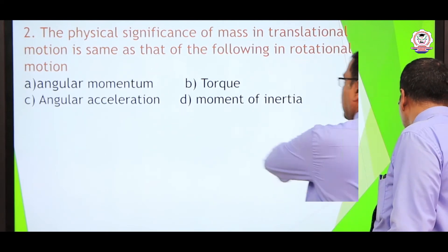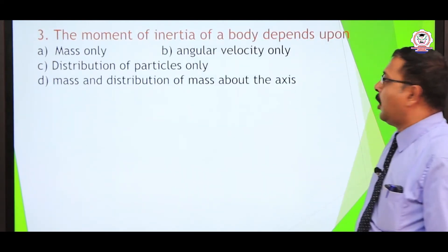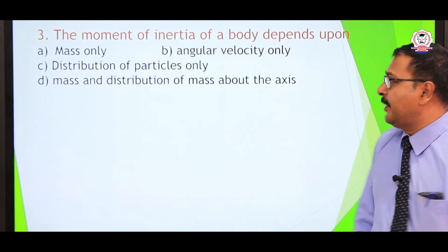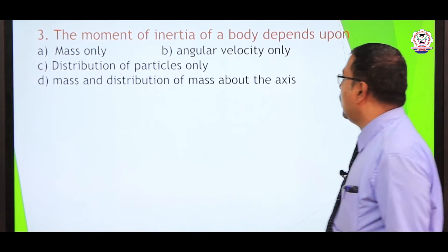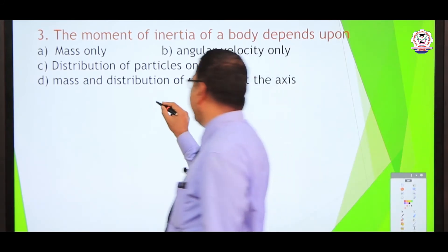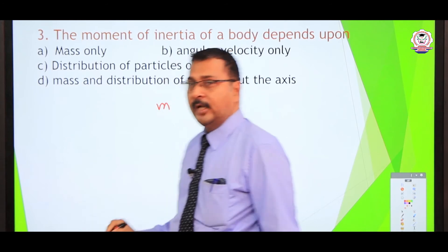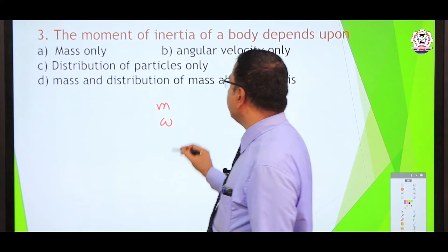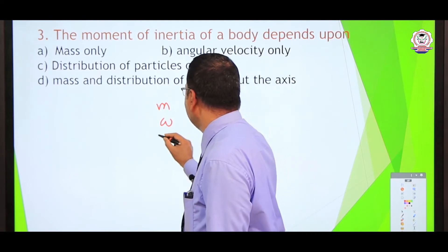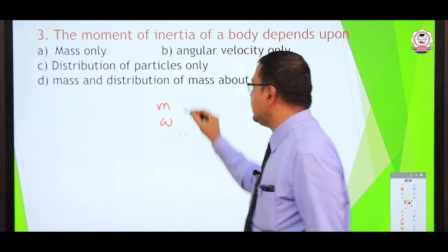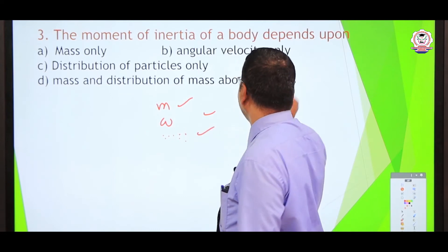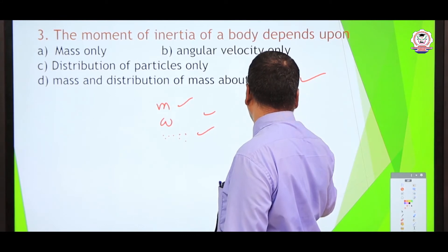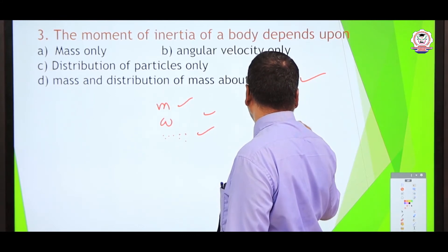The moment of inertia of a body depends on what factors? It does not depend on mass alone, nor on angular velocity omega. It depends on both the distribution of particles and the individual mass of the body. So the correct answer is mass and distribution of the body.